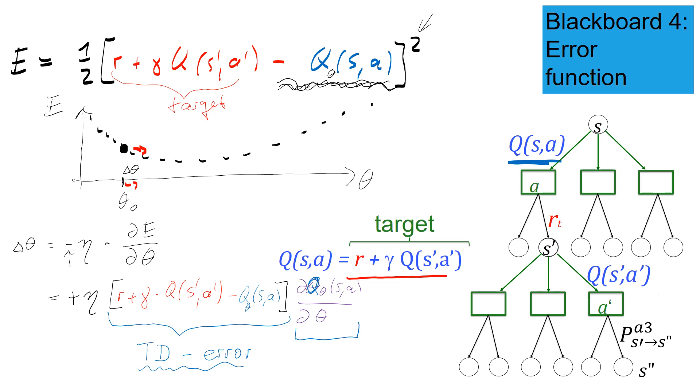And that's the derivative of my Q function with respect to the parameters. And this derivative, remember the Q function is modeled by a radial basis function network or by a neural network, this is where you have to take the derivative. And then finally, this gives the update delta theta.